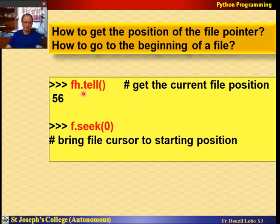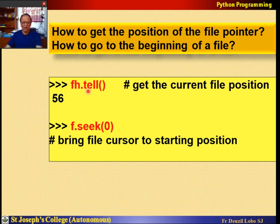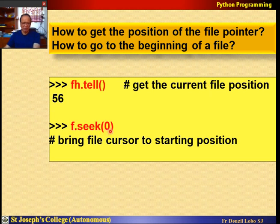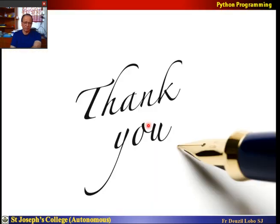There are two more important file methods. fh.tell() gives you the current position of the file pointer — for example, it tells you the pointer is at the 56th character. fh.seek(0) brings the cursor back to the beginning of the file. If you have read some data but want to go back to the start, you call fh.seek(0). These are two important functions needed while working with some problems. Thank you.